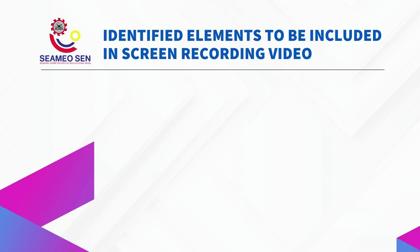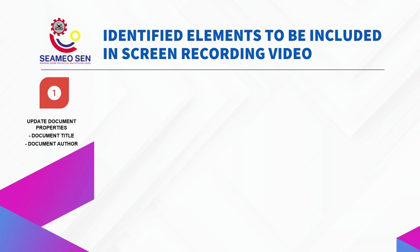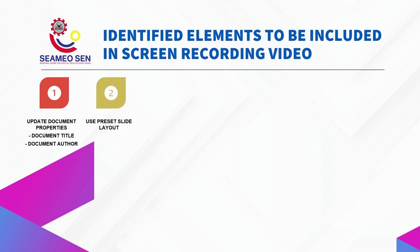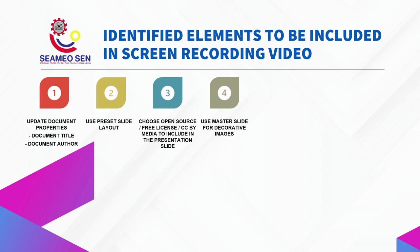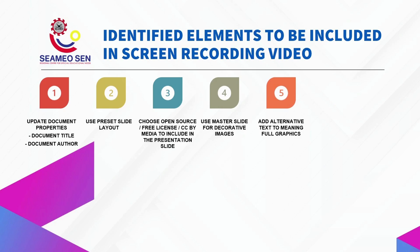While preparing an IOER video, there are some important elements that need to be considered. Firstly, do update the document properties which includes document title and document author. Secondly, use a preset slide layout. Third, choose an open source or free license or CC by media to be included in the presentation slides. Then, use a master slide for decorative images. Fifth, add alternative texts to explain graphics.